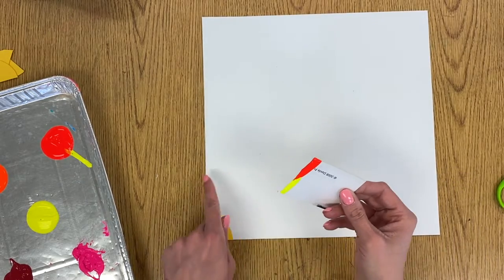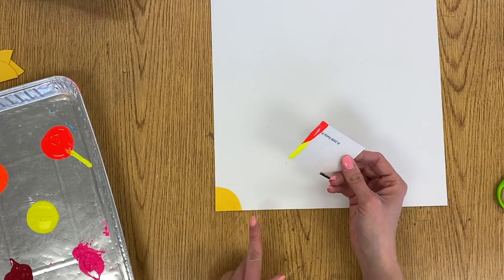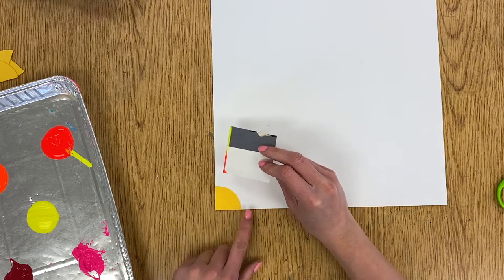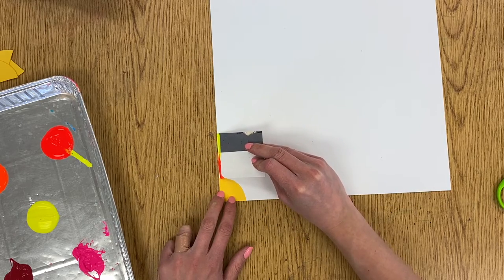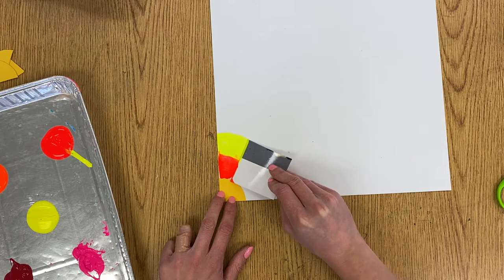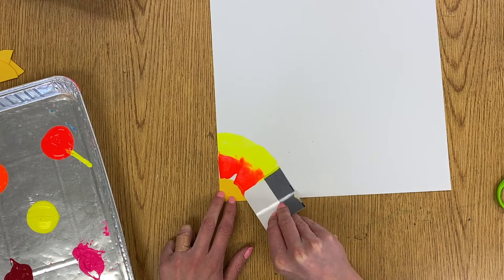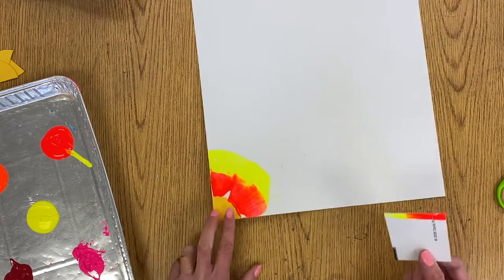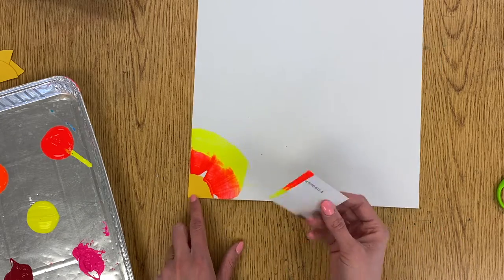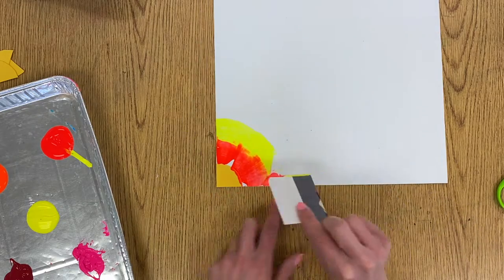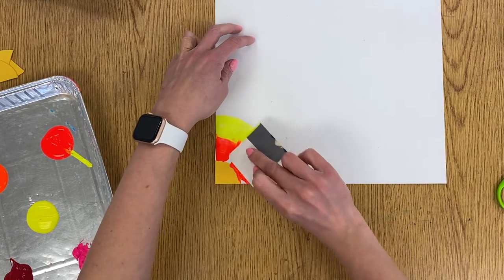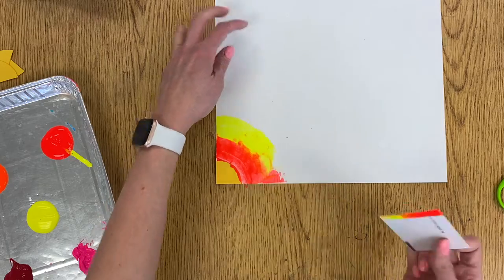Then we're going to scrape this onto our paper following that circle. I'm going to start over here on the edge and I'm going to press down and scrape following my circle, just like that. I've got a little bit of white space right there so I could flip it and add a little bit more paint right there, or you could just leave it - it's okay if we have a little bit of white spots today.